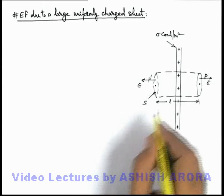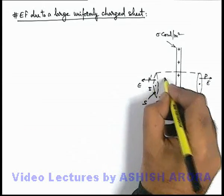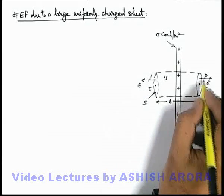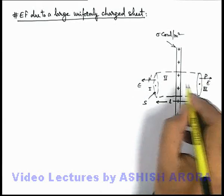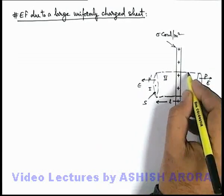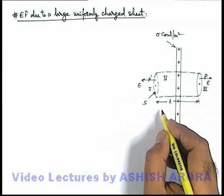And we can divide this Gaussian surface into three parts: 1, 2, and 3, where 1 and 3 are the circular faces of the cylindrical section and 2 is the lateral surface of the cylinder.